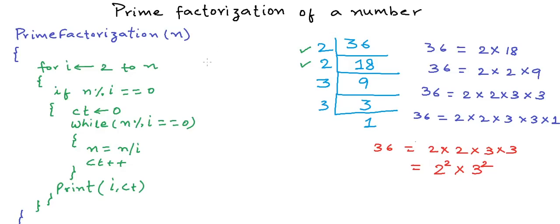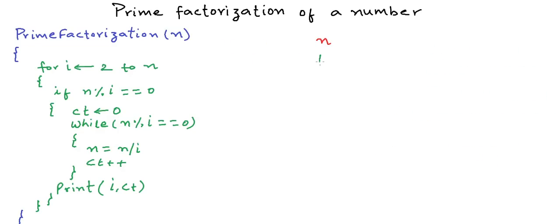When we analyze algorithms, it is always good to analyze the worst case scenario. So the time complexity is O(n) in the worst case. Can we do something better? Let us simulate this algorithm using an example — let's say n is equal to 44 — and we want to find the prime factorization of 44.